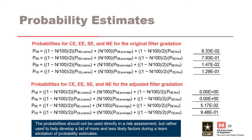Using the example from the previous slide, the representative base soil gradation N is 80%; therefore there is 10% finer and 10% coarser than representative grading. In this example, proportions were also estimated for an adjusted filter gradation due to segregation or washout. Lastly, assess how representative the gradation may or may not be. Use judgment to adjust the calculated percentages to account for other factors such as distribution of core and filter gradations in the fill, borrow area variability, and selective placement of materials. The probability should not be used directly in a risk assessment, but rather used to help develop a list of more and less likely factors during a team elicitation of probability estimates.